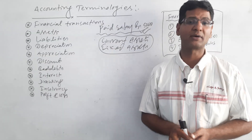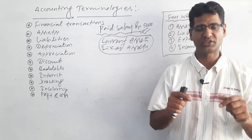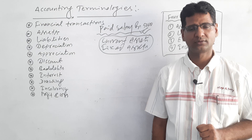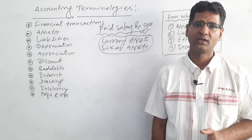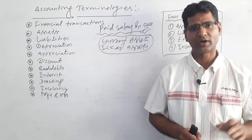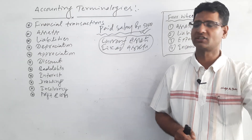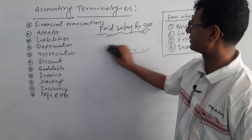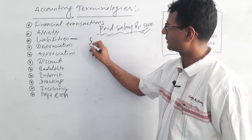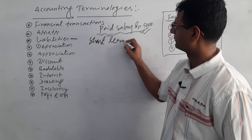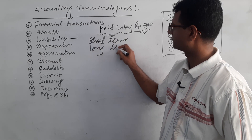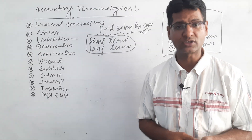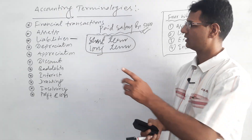Liabilities are payable amounts — obligations of the business which we have to pay to others. Without liabilities, we cannot do much in business. There are two types of liabilities: short-term current liabilities and long-term liabilities. On the basis of time, those payable amounts which we have to pay within one accounting year are short-term liabilities.